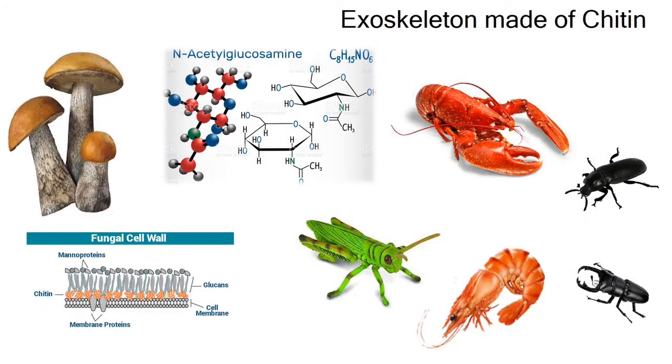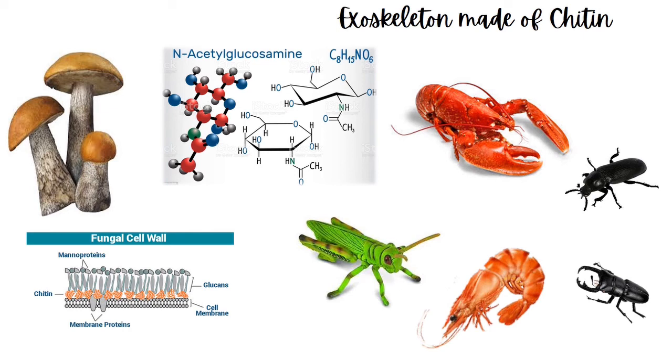Another form of polysaccharides is chitin. Chitin is a modified polysaccharide with nitrogen, and from the formula being shown in the middle: C8H15NO6.